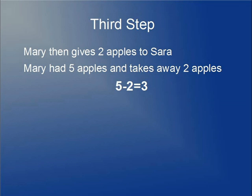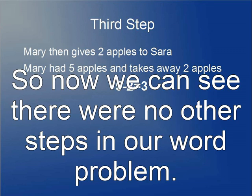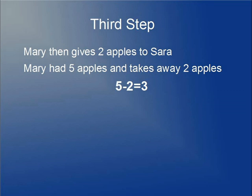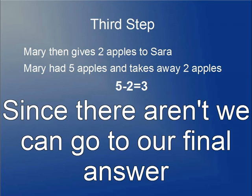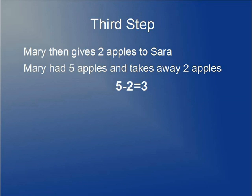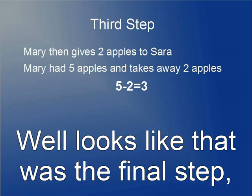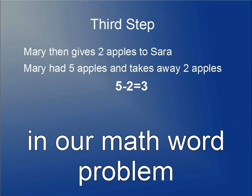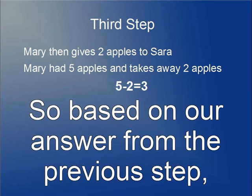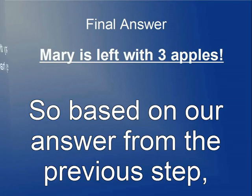Let's see where we are in the word problem process. We go back and check if there are any other steps — and since there aren't, we can move on to our final answer. That was the final step in this math word problem. Based on our answer from the previous step, Mary is left with three apples.